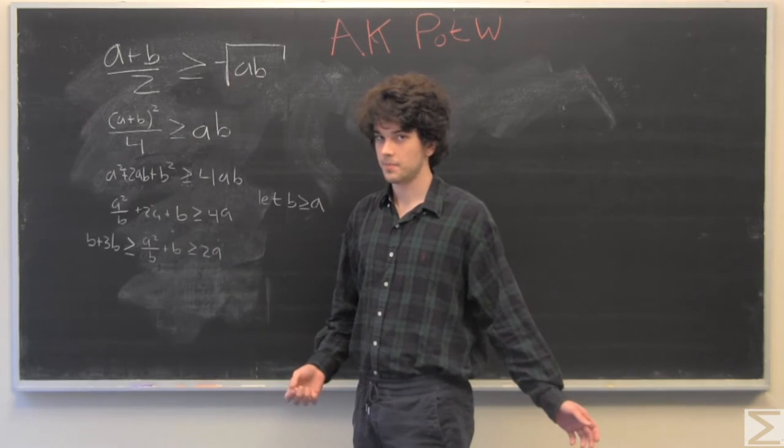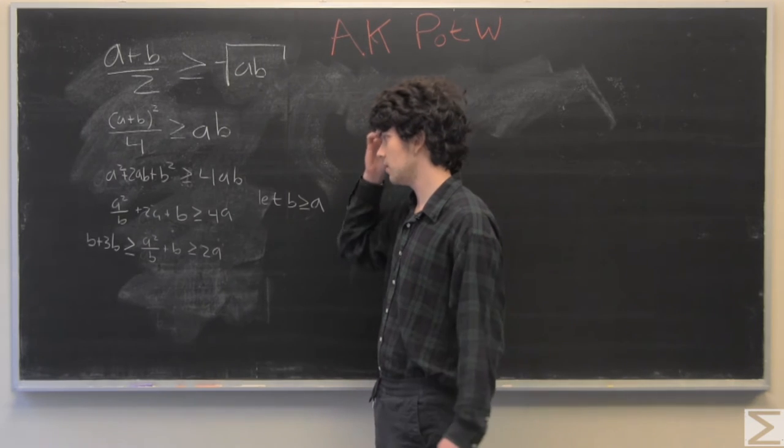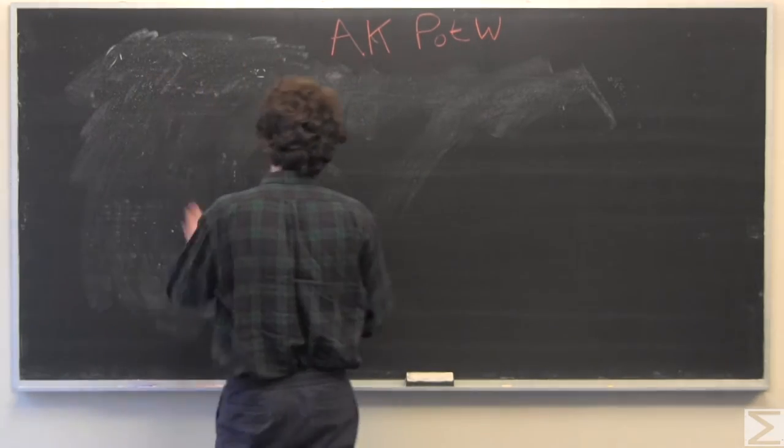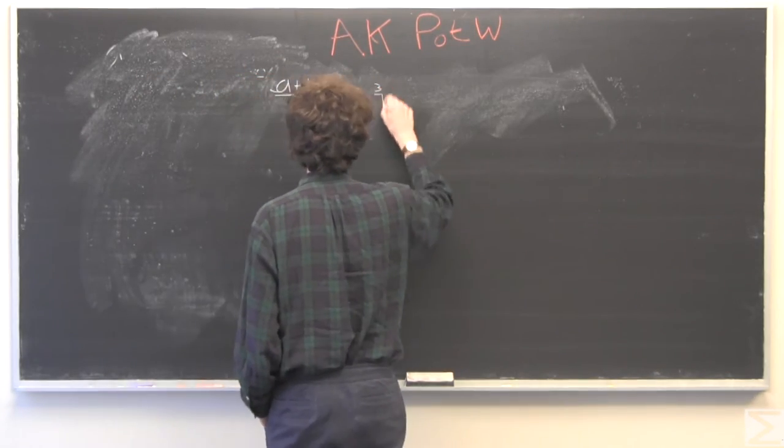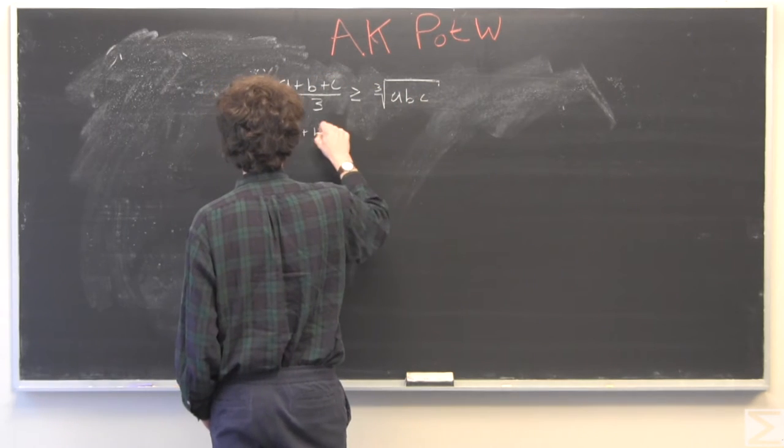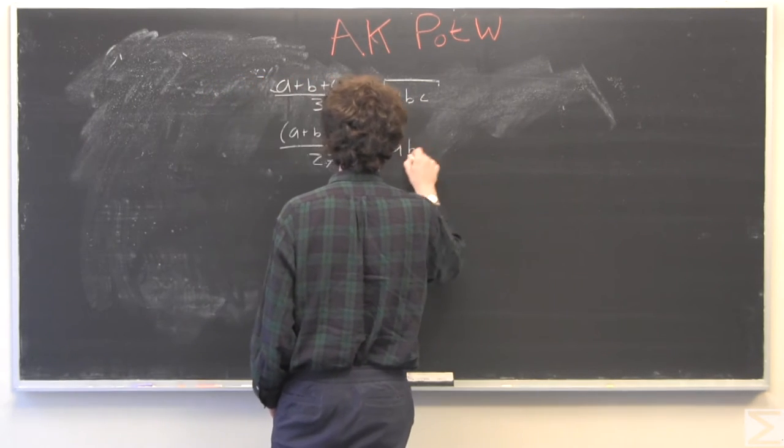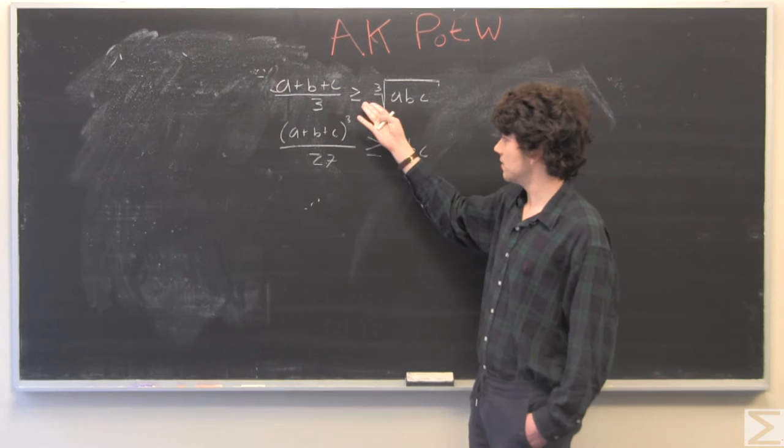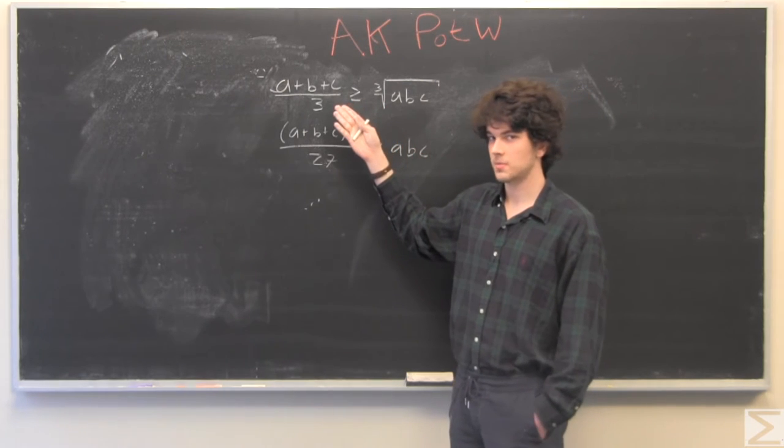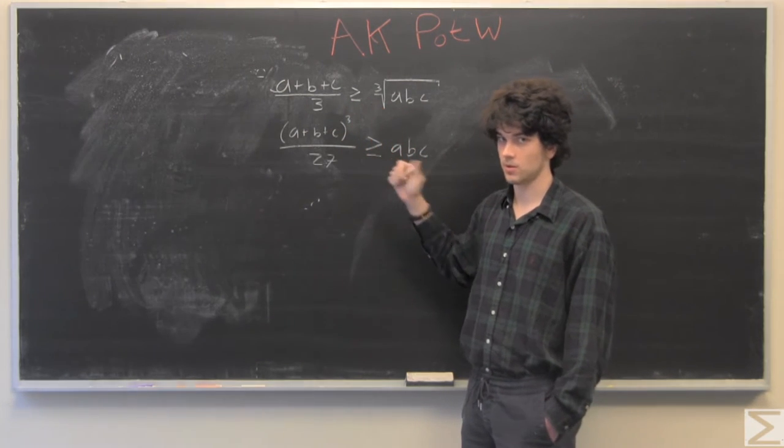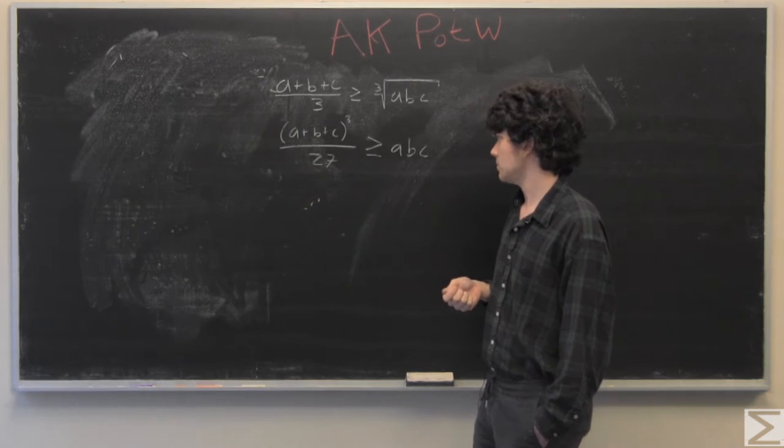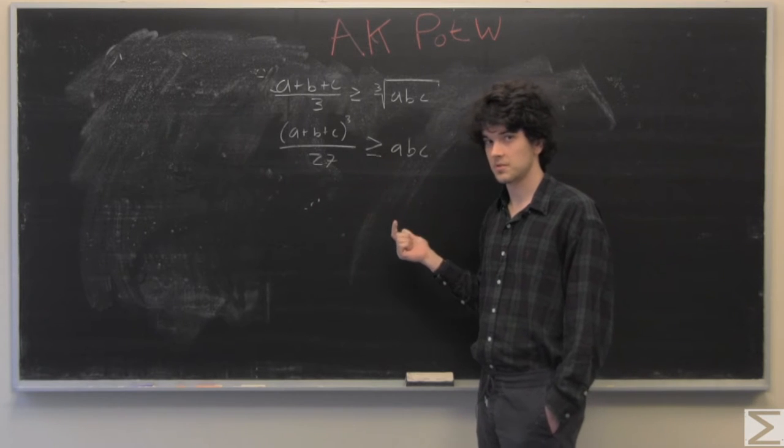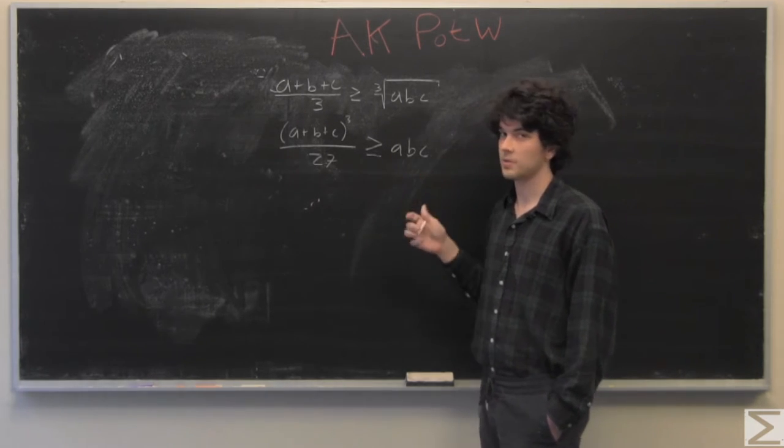Now we just have to prove this is true for 3 variables. So here we have the cubed version of this, which is the arithmetic mean versus geometric mean inequality for 3 variables. What we're going to do here is set c to be the greatest of the three variables and divide everything by c cubed.